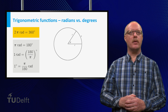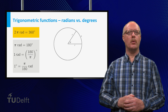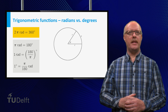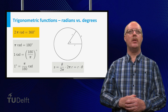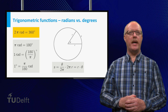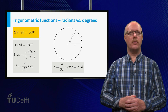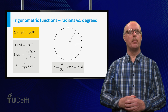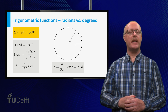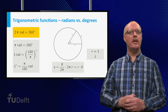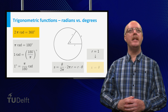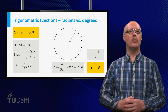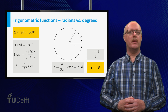If we consider a sector with angle theta in a circle with radius r, then the length of the arc s equals theta divided by 2π times the circumference 2πr of the complete circle, which is the radius r multiplied by the angle theta. If we take a circle with radius 1, then the arc s is equal to the angle theta measured in radians.